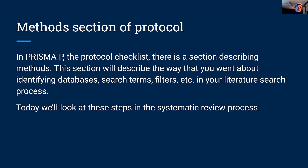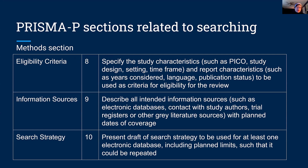Last week we talked about PRISMA-P, which is the preferred reporting for these different processes. They have a protocol checklist so that you can write your protocol. That talks about the pieces before you can get started. This is a table that talks about those different sections we're going to be looking at today, specifically related to searching. These are the sections you should have nailed down before you even start with your protocol — the eligibility criteria, information sources, where you're going to find these things, how you're going to search for them. That all needs to be planned out before.